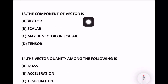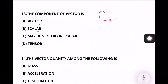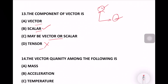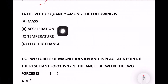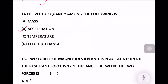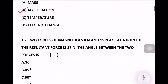Next question: The component of a vector — is it a vector or scalar? The right answer is scalar. The components of a vector are scalar. Next question: The vector quantity among the following — mass, acceleration, temperature, electric charge — the answer is acceleration. Option number B is the right answer.